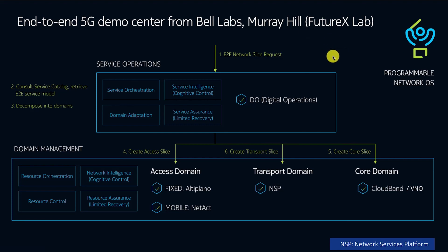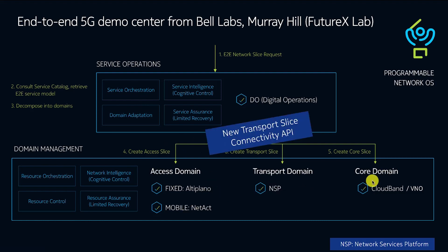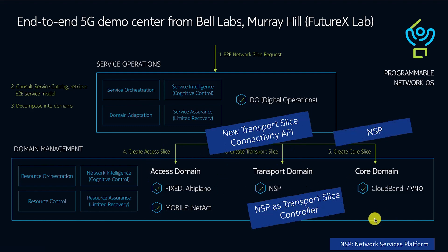This is a screenshot of the real lab that we have in Bella. This is the realization of FutureX from Nokia. It contains a control end-to-end orchestrator, and it has RAN, transport, and core. As shown here, NSP — which is the CarrierSense solution from Nokia — is present here.